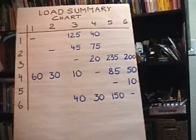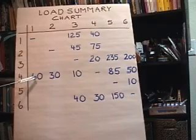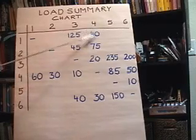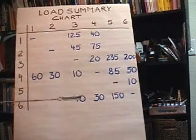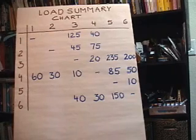Likewise, between department four and department one, we've got 60 loads. Taken together, the 60 and the 40, we've got 100 loads going between those two departments. We can calculate the loads in a likewise manner for all the other department combinations.